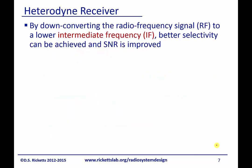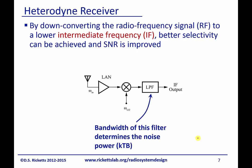Let's move on to the next type of single-stage frequency conversion: the heterodyne receiver. By down-converting an RF signal to a lower intermediate frequency — not to DC but to an intermediate frequency — we can achieve better selectivity and improve our SNR.